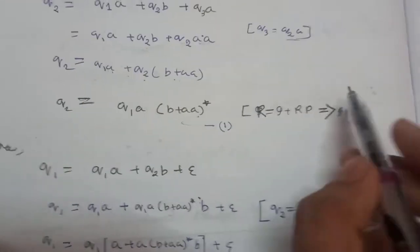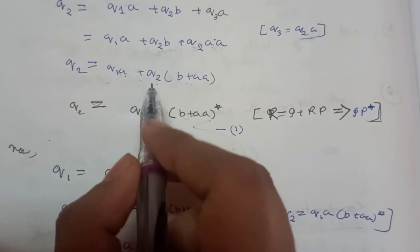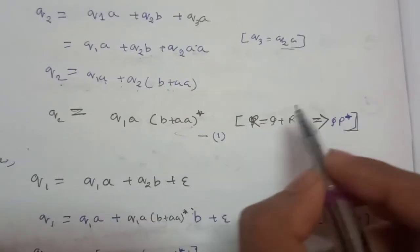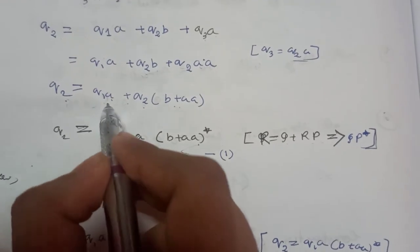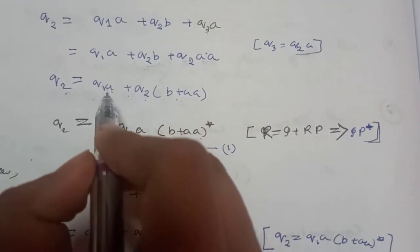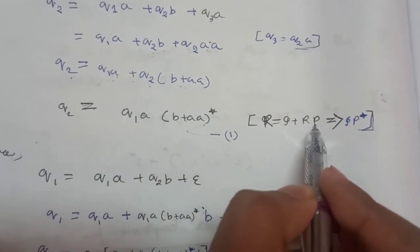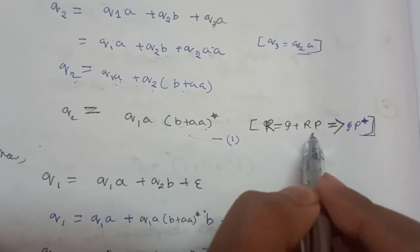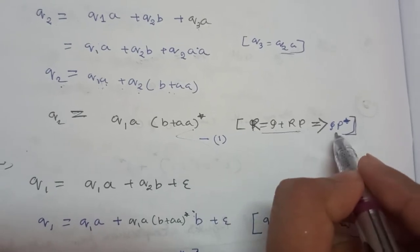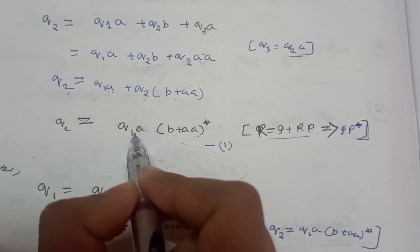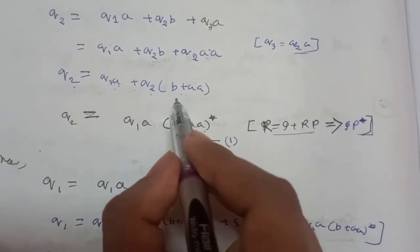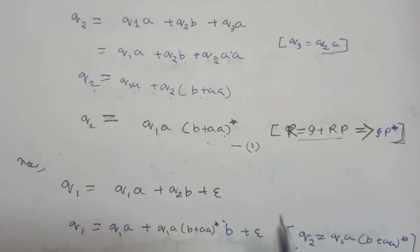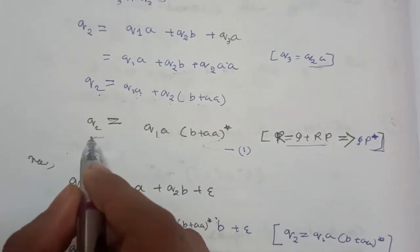This is now in the form of Arden's theorem: R = Q + RP. Here Q2 is R, Q1A is Q, and (B + AA) is P. By Arden's theorem, the solution is R = QP*. So Q2 = Q1A(B + AA)*.